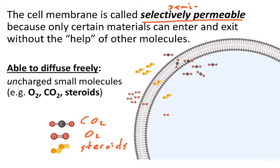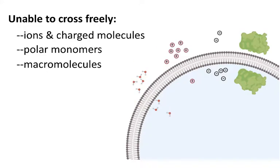You'll notice all of these are nonpolar, and they're also small. So what can't cross? Well, ions and charged particles, polar monomers like amino acids and glucose, and finally large macromolecules like proteins as shown here.